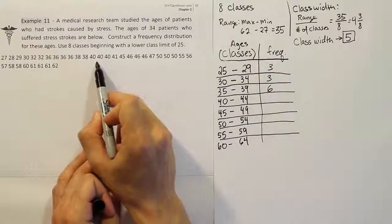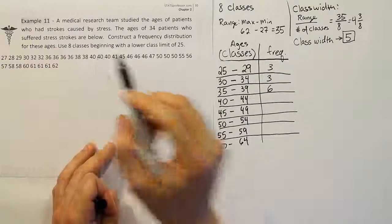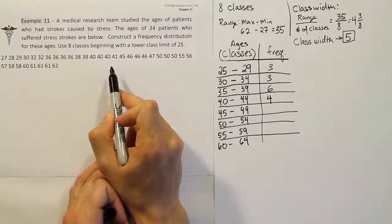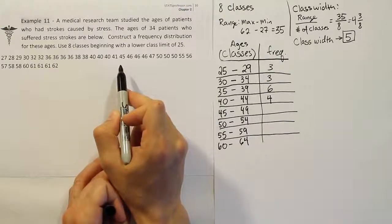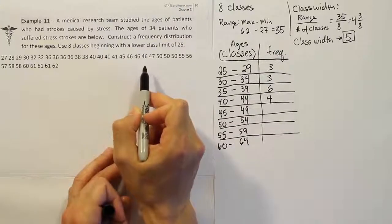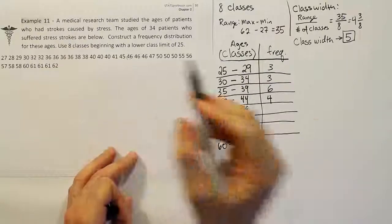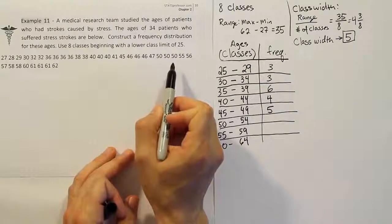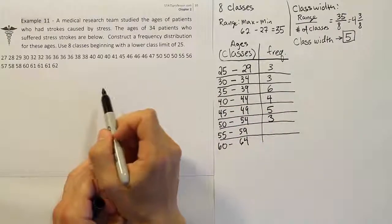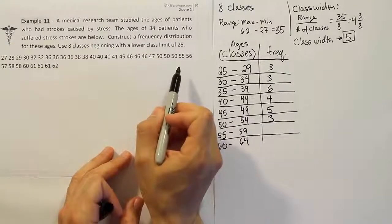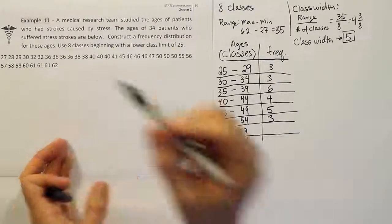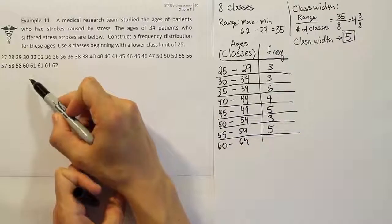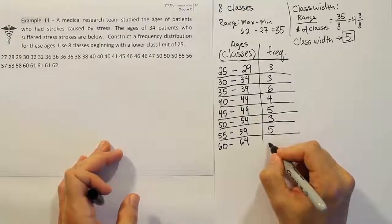For 40–44, there are 4 values. For 45–49, counting gives us 5 values. For 50–54, there are 3 values. For 55–59, counting gives 5 values. And finally for 60–64, there are 5 values that fit in that last class.